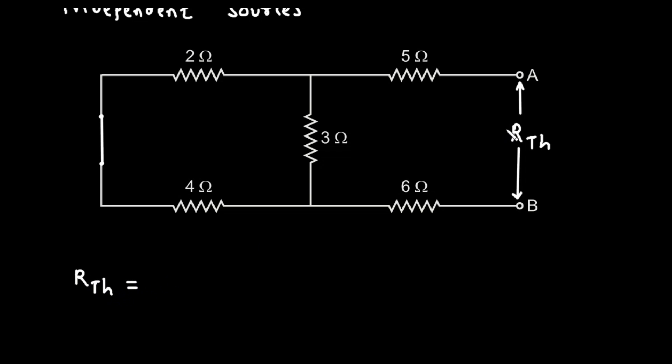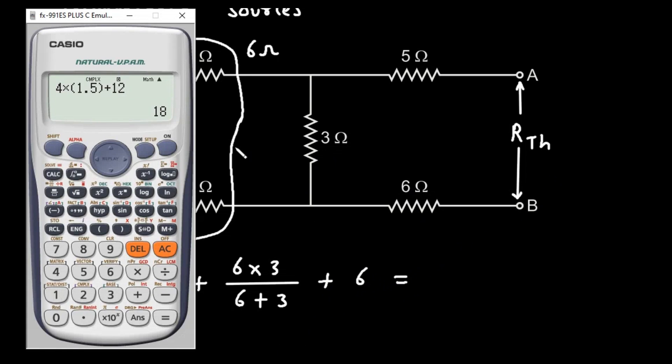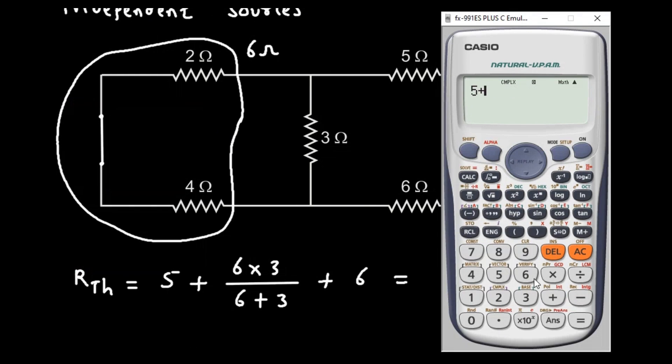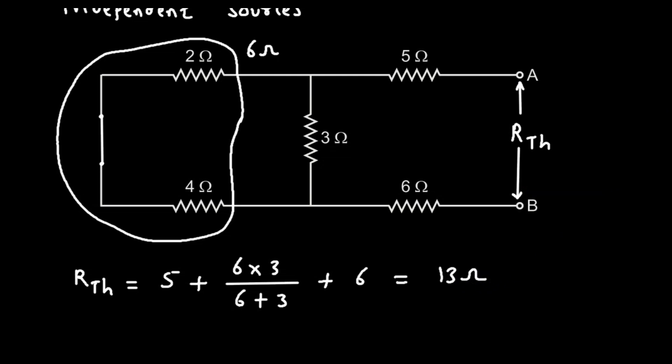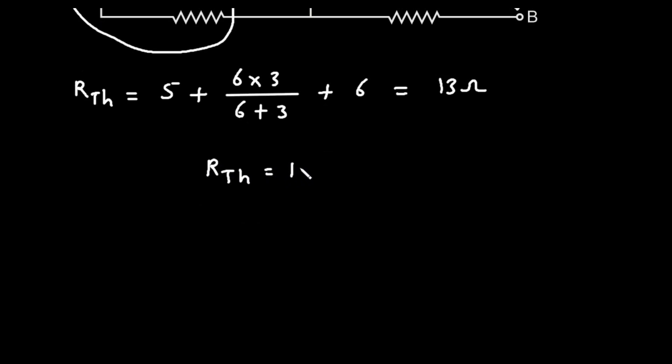So here RTH is equal to, we will start from here. As we can see this 5 ohm is connected in series, so 5 plus, this 2 ohm and 4 ohm are connected in series, so this will be 6 ohm directly. Now this 6 ohm and 3 ohm are connected in parallel, so it will be 6 into 3 divided by 6 plus 3. Now they are in series with this 6 ohm, so plus 6. Now if we calculate this in calculator, it is equal to 13 ohm. 13 ohm is the value of RTH, that is Thevenin's resistance.